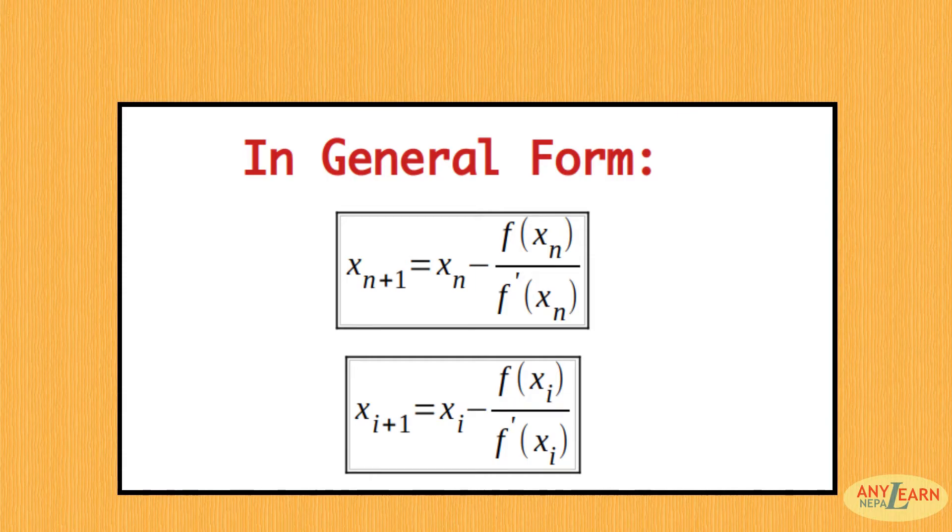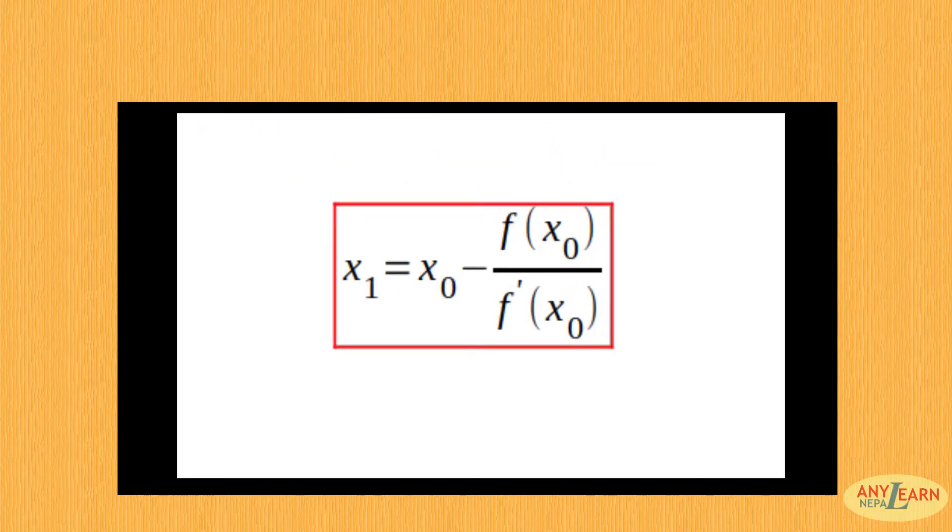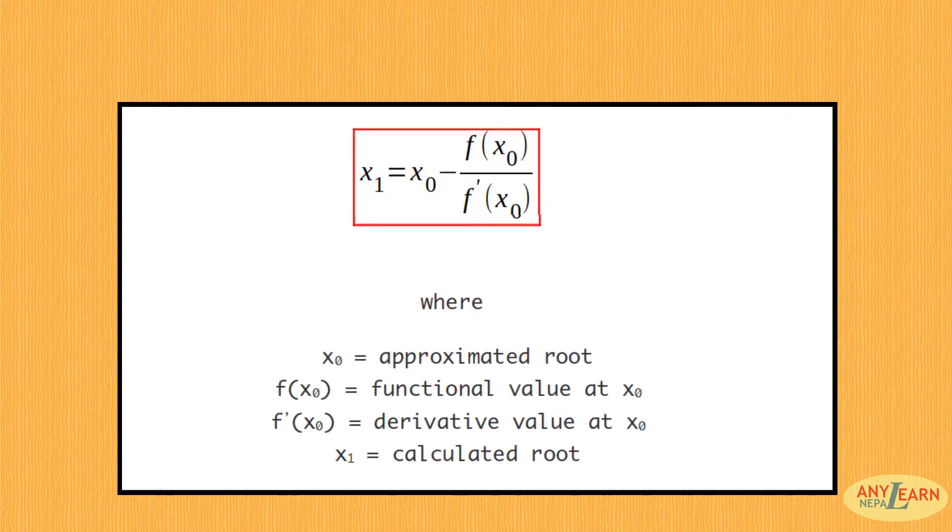While putting different values of n or i in those above equations, we can get x1, x2, and so on. Let's take the simple form for demonstration: x1 equals x0 minus f(x0) by f'(x0), and try to understand the concept behind this.